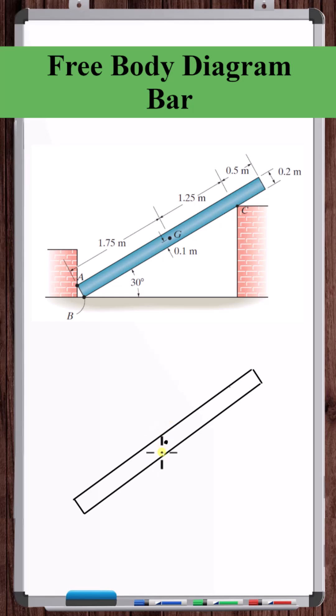The only body force to consider is gravity. So we'll put the weight of the bar acting at the center of mass. The bar is 100 kilograms, so 100 times 9.81 is 981 newtons. All right, so that's all the body forces.